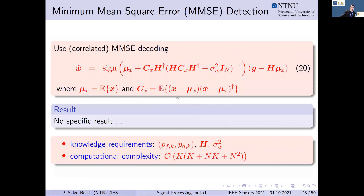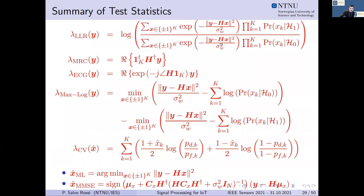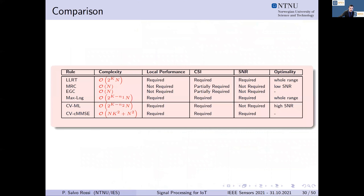An alternative is minimum mean square error (MMSE) detection, expressed in equation 20. In this case, there are no specific optimality results, but knowledge requirements are still high. However, the computational complexity is significantly reduced — it becomes polynomial in both the number of sensors and number of receive antennas, no longer exponential. The summary of all different rules for both the decode-and-fuse and decode-then-fuse approaches is shown in the slides, with a comparison table of requirements, complexity, and performance.